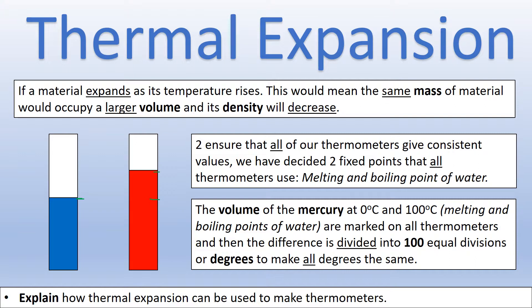This is the process used in a factory when making thermometers. The process of using these two fixed points — zero degrees and 100 degrees — was invented by a man called Celsius, who is Swedish, which is why one of the temperature scales is called the Celsius scale. Interestingly, Celsius originally did it the other way around: he made the boiling point of water zero and the freezing point 100, which seems odd to us now.